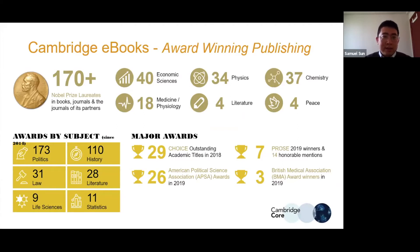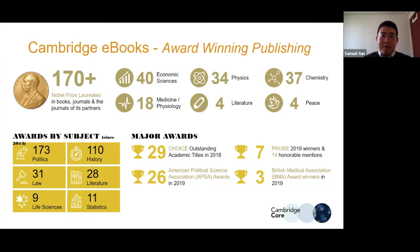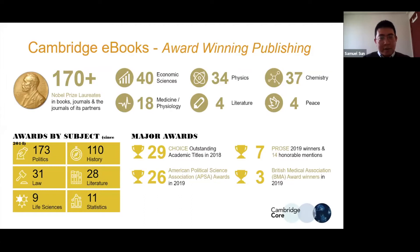We have about 170 Nobel laureates who have had either books or articles published with CUP. However, for most of these authors, their books were published during the early stages of their research careers. When they win the Nobel Prize, commercial publishers can offer more favorable commercial conditions, so these authors often move to commercial publishers for subsequent books, since we are a not-for-profit organization.